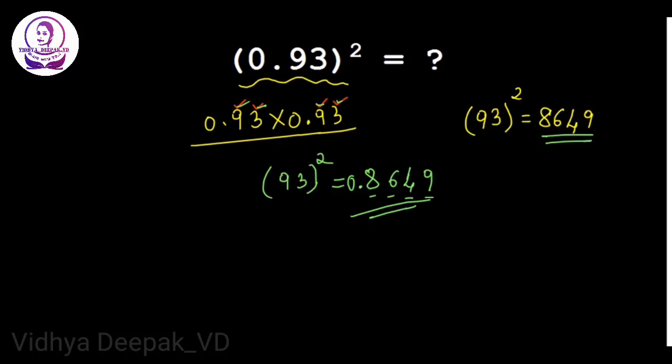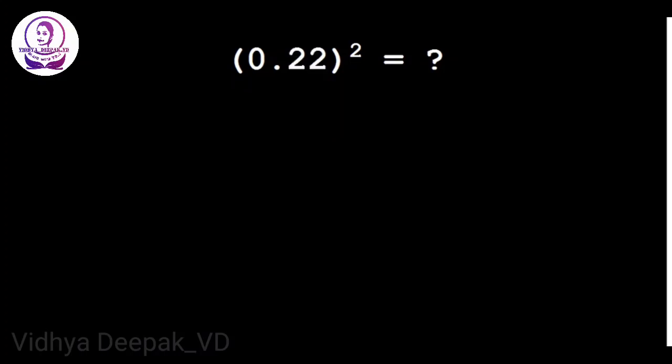Let's see one more problem: 0.22 square. Here we know that now we have to find 22 square first. So what is 22 square? 2 times 2 is 04.